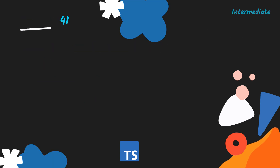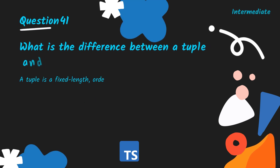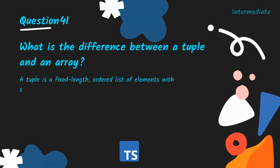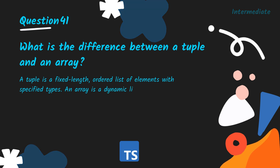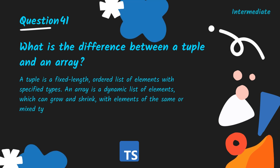What is the difference between a tuple and an array? A tuple is a fixed-length ordered list of elements with specified types. An array is a dynamic list of elements, which can grow and shrink, with elements of the same or mixed types.